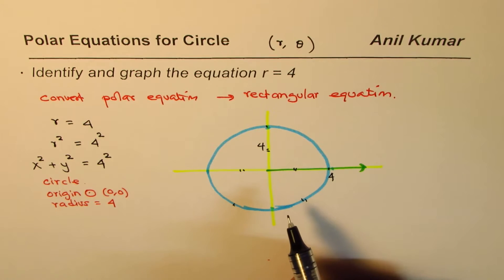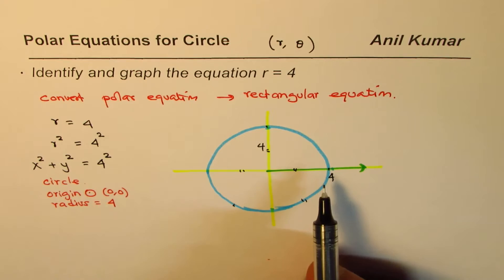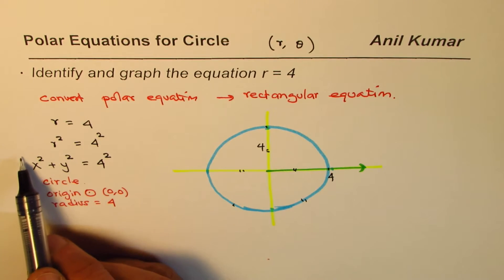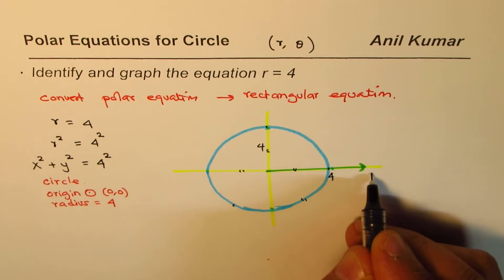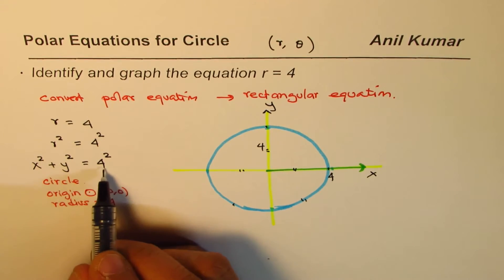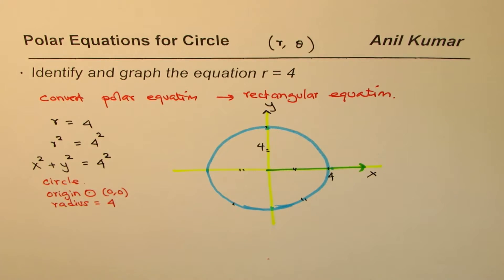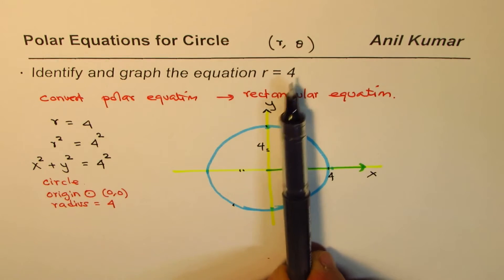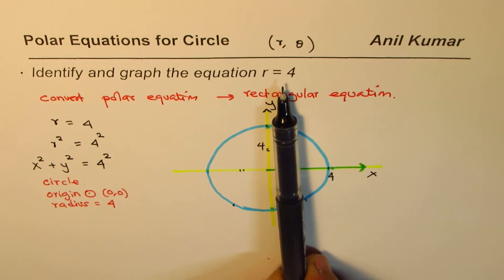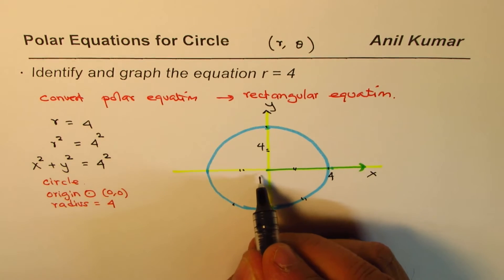r equals 4 means the same distance for any angle theta, which gives you a circle. If we sketch with respect to the Cartesian coordinate system, the x-axis and y-axis apply, and x squared plus y squared equals 4 squared is a circle with radius 4. That is the sketch for the polar equation r equals 4.